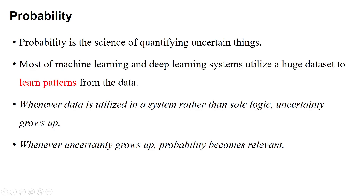Hello everyone. We are using probability theory in machine learning and deep learning applications. Probability is the science of quantifying uncertain things. Whenever our output is uncertain, probability is applied. Most machine learning and deep learning applications utilize huge datasets to learn patterns. Whenever data is utilized in a ML or DL system rather than only logic, uncertainty grows, and probability becomes highly relevant.